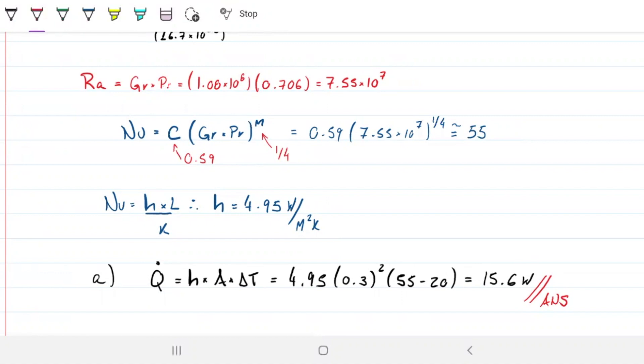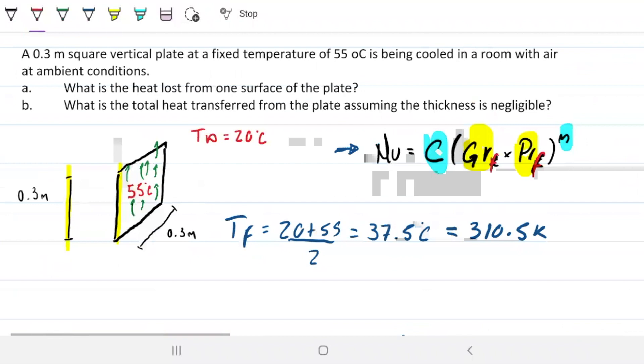What about the second part? What does that second part ask us for? Part B - what is the total heat transfer from the plate, assuming the thickness is negligible? So now, we're not only interested in the part with the arrows there, we're also interested in the whole thing.